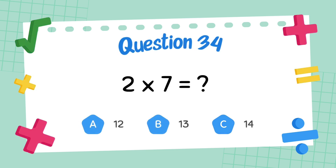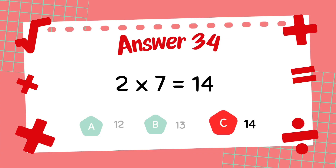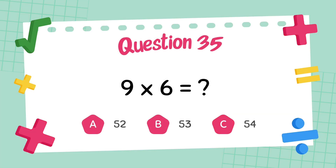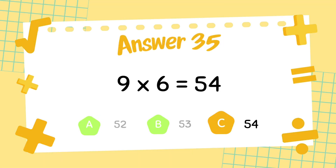What is 2 multiply 7? The answer is 14. What is 9 x 6? The answer is 54.